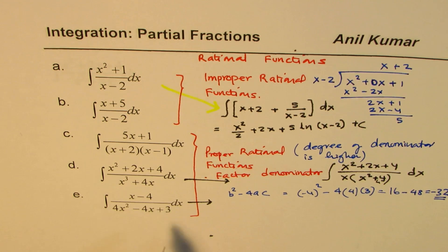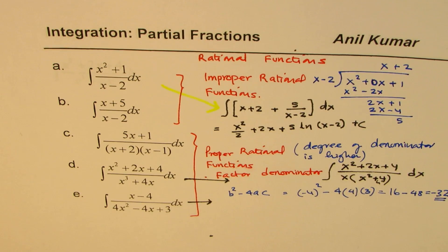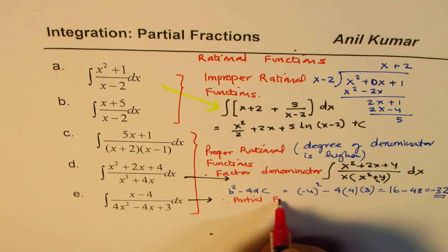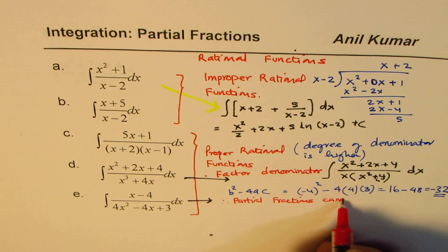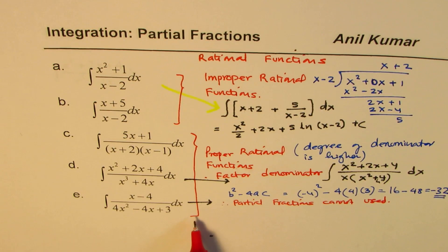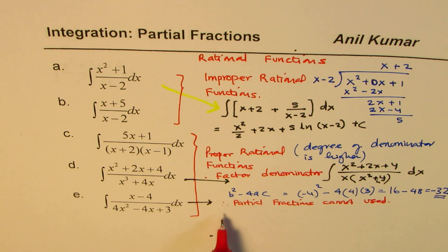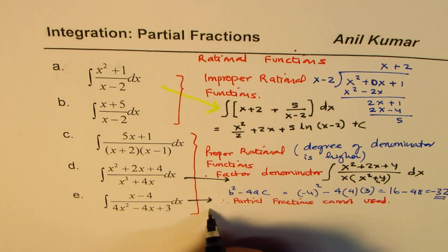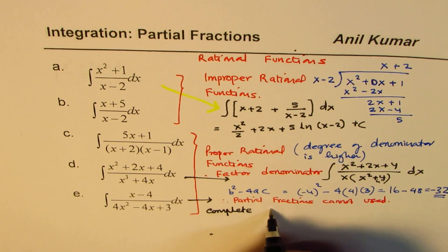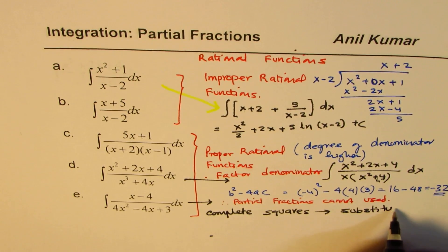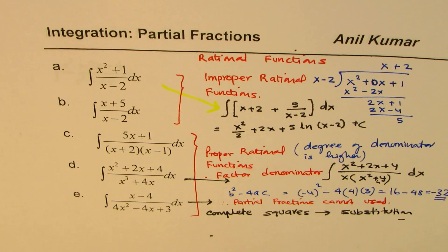So in this particular case, you cannot use partial fractions. So partial fractions cannot be used. Therefore, partial fraction cannot be used. So likewise, we have many exceptions where rational functions cannot be integrated using this technique. So in such cases, what you need to do is you need to complete the squares and then do substitution. So the strategy here is to complete squares and then do substitution or some other method.